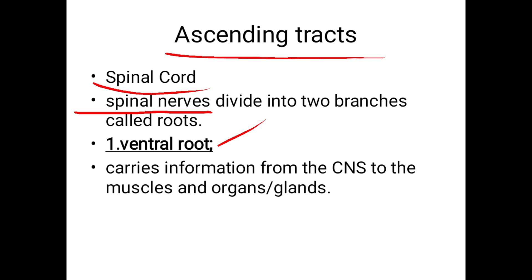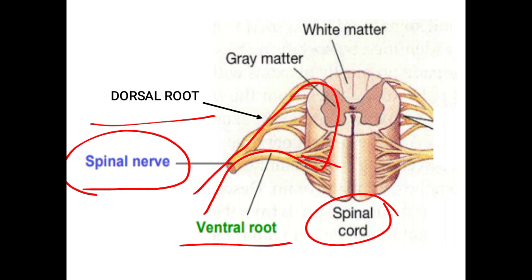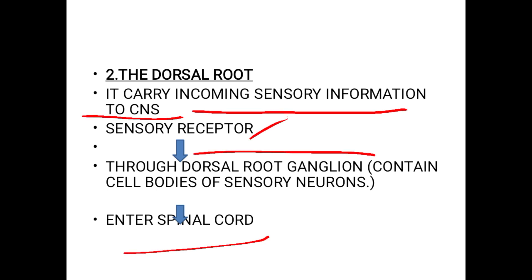Through the ventral root, nerves carry information from the CNS to the muscles and organs — it is descending down. Through the dorsal root, sensation from the peripheral part enters the spinal cord. It carries incoming sensory information to the CNS through the dorsal root ganglia, then enters the spinal cord and ascends to the CNS.